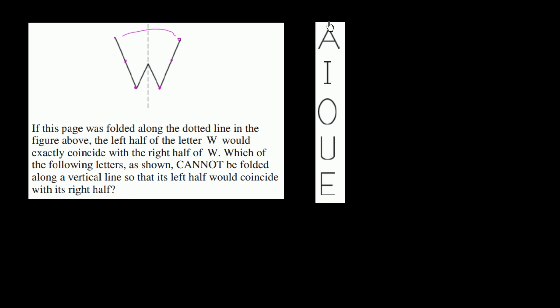Well, let's just think about each of these. If I were to drop a vertical line down the center of A, it looks like A is symmetric about that. There are mirror images on the left and the right hand side. Same thing for the letter I, same thing for the letter O. Mirror images on the two sides. Same thing for the letter U.